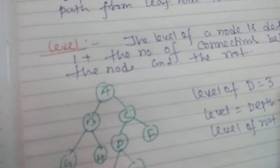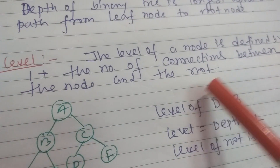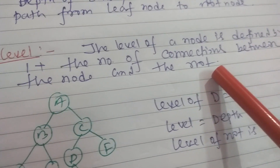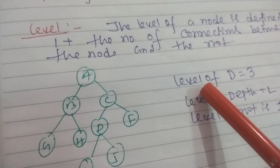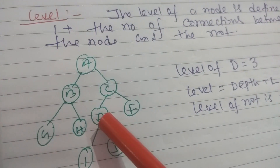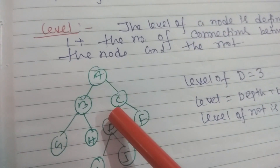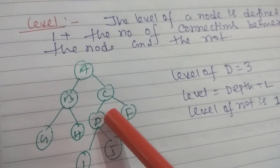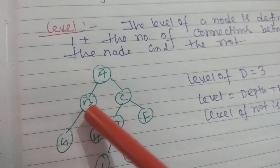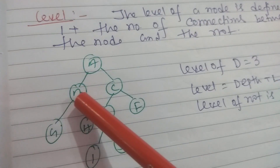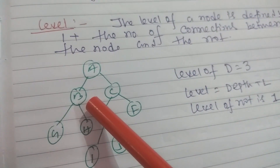Now, level. The level of a node is defined by 1 plus the number of connections between the node and the root. So level is always equal to depth plus 1. For example, depth of B is equal to 2, and 1 plus the number of connections between node B and the root gives its level.